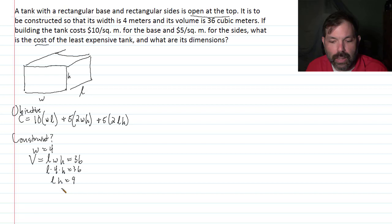So now what I can do is I can solve for either of these pieces. Let's go ahead and solve for L. So then L is equal to 9 over H. So now what I can do is I can take the fact that the width is 4 and the length is 9 over H. And I can substitute them into the objective function. And I'll have then that the objective function is just a function of H.